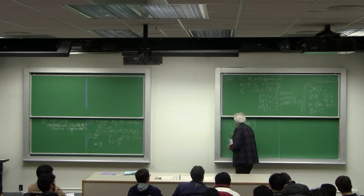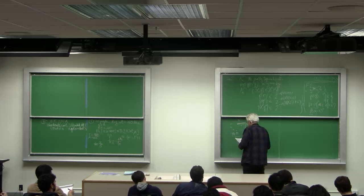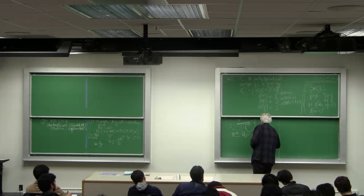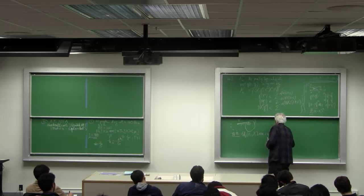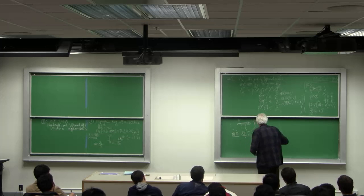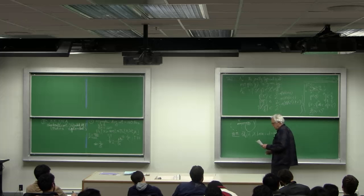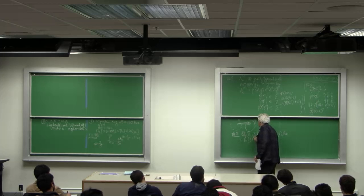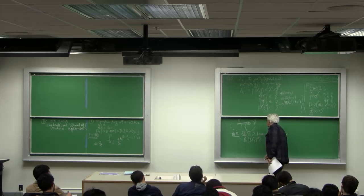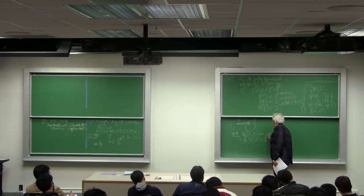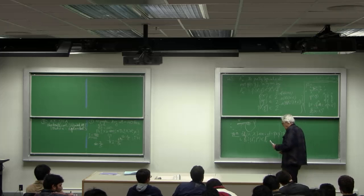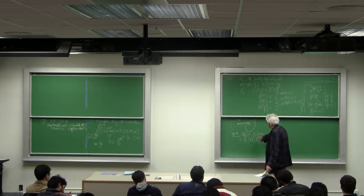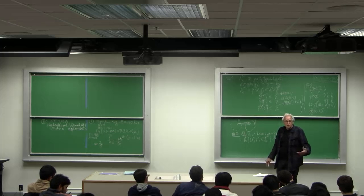Now we proved the following theorem. If x_i y_i are i.i.d. according to p of x y, then the following statements are true. One: the probability that such a random pair of sequences is considered to be typical goes to one. So in other words your probability that x and y are typical is nearly one.